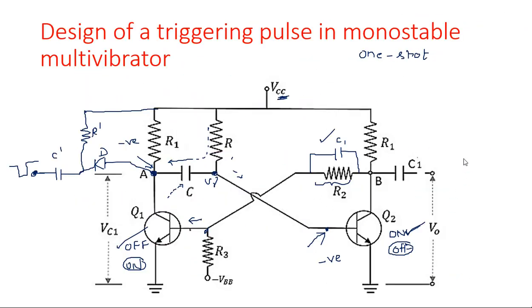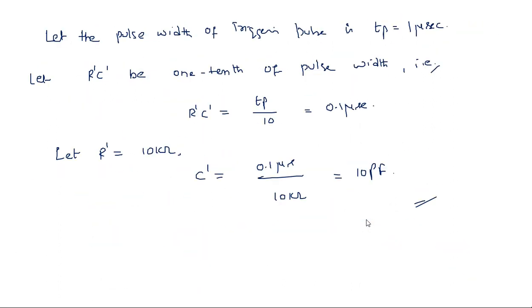After the application of the triggering pulse, the states of the two transistors are altered. After some time, the capacitance charges and makes transistor Q2 turn ON again, returning the circuit to its stable state. Thank you.